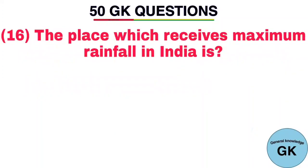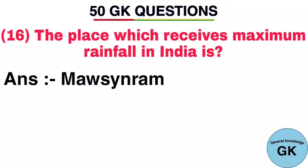Question number 16. The place which receives maximum rainfall in India is. Answer: Mawsynram.